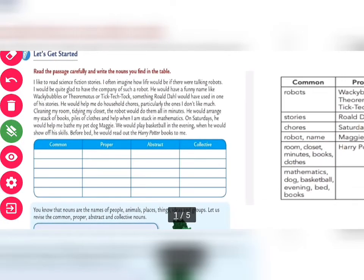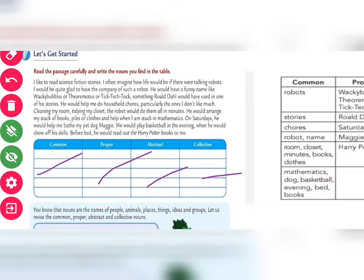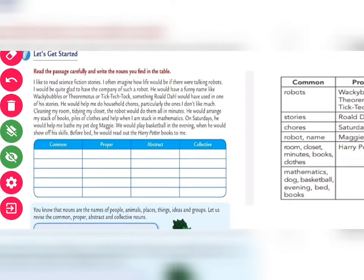Here, on the basis of this passage, there are some nouns and kinds of nouns given — common, proper, abstract, and collective noun. You will read this passage and on the basis of that you have to find out these nouns. Let us study this passage.